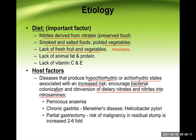Conditions with hypochlorhydria include pernicious anemia, which is an autoimmune disease where parietal cells of the stomach are attacked by the immune system. There is presence of anti-parietal cell antibody. The parietal cell has two functions: HCl production and intrinsic factor formation. Intrinsic factor is essential for absorption of vitamin B12, so its absence leads to megaloblastic anemia. Because of decreased hydrochloric acid synthesis, there is hypochlorhydria or achlorhydria.